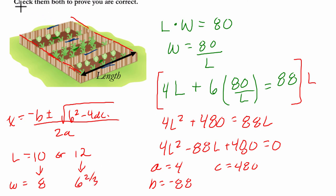So it also asks us to check them both to prove that you're correct. Well, what you can do to figure this out is plug in 10 into your perimeter formula, 4L plus 6 times 80 over L, and you'll get 88, because 4 times 10 is 40, 80 divided by 10 is 8, and 8 times 6 is 48, 48 plus 40 is 88. It works. And the same thing is true with 12, which is a little bit messier, 4 times 12 is 48, and then 6 times 80 over 12 is 40, and that sums to 88. So both of them work.